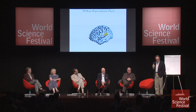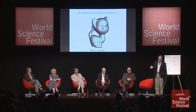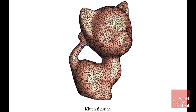The next slide shows how we can apply this theory to the reconstruction of sparse cue surfaces. Imagine that we have this kitten figurine as a complete surface, and then we sample it.